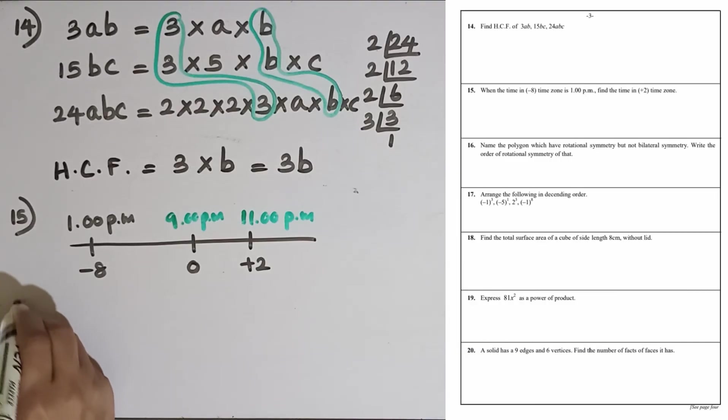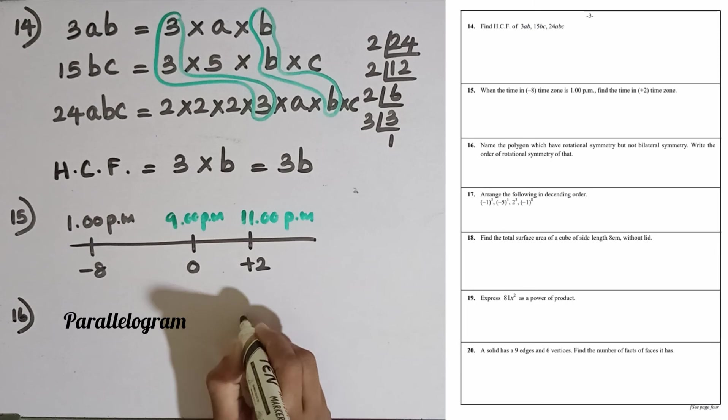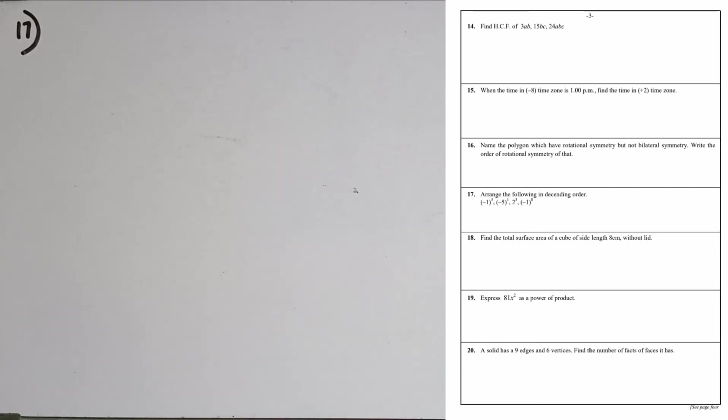Question number 16: Name the polygon which have rotational symmetry but not bilateral symmetry. Write the order of rotational symmetry of that. The only figure with rotational symmetry but not bilateral symmetry is the parallelogram. The order of rotational symmetry is equal to 2.